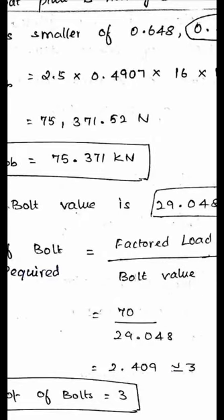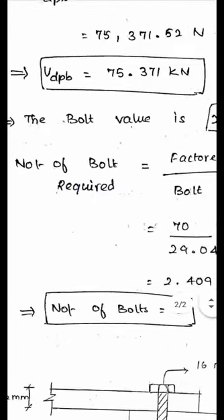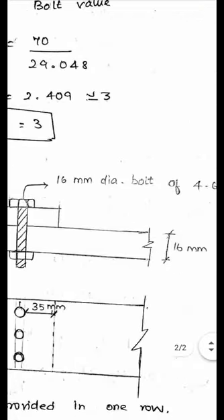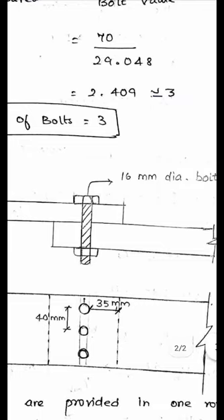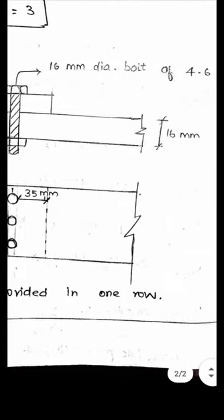Number of bolts required = factored load / bolt strength = 70 / 29.048 = 2.409. Round up to 3 bolts. Provide 3 bolts in one row. The results are shown pictorially: 12mm plate lapped over 16mm plate, M16 bolts of grade 4.6, with edge distance of 35mm and center-to-center pitch of 40mm, showing three bolts in one row in the top view.